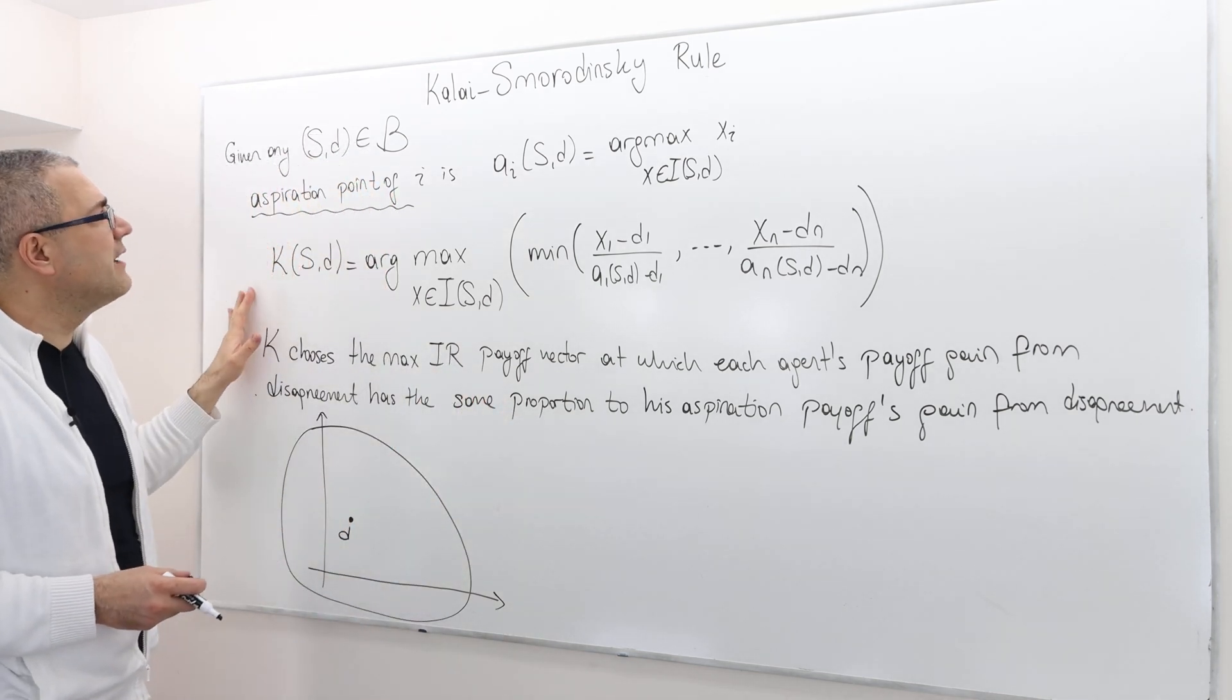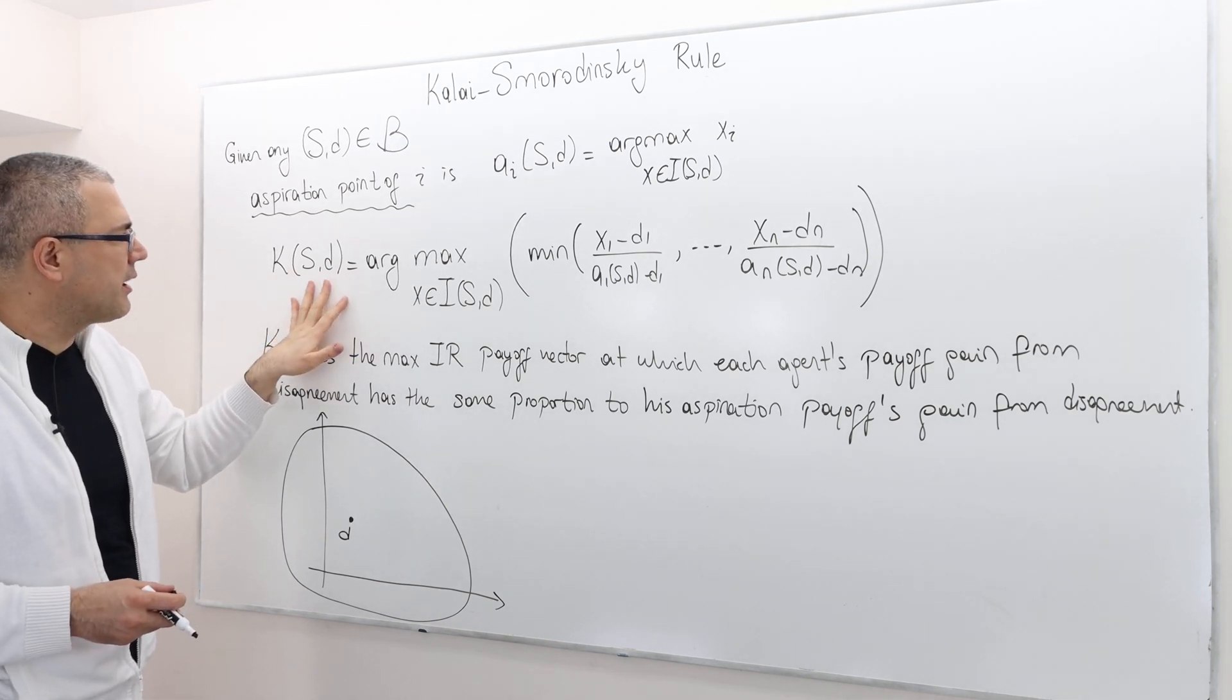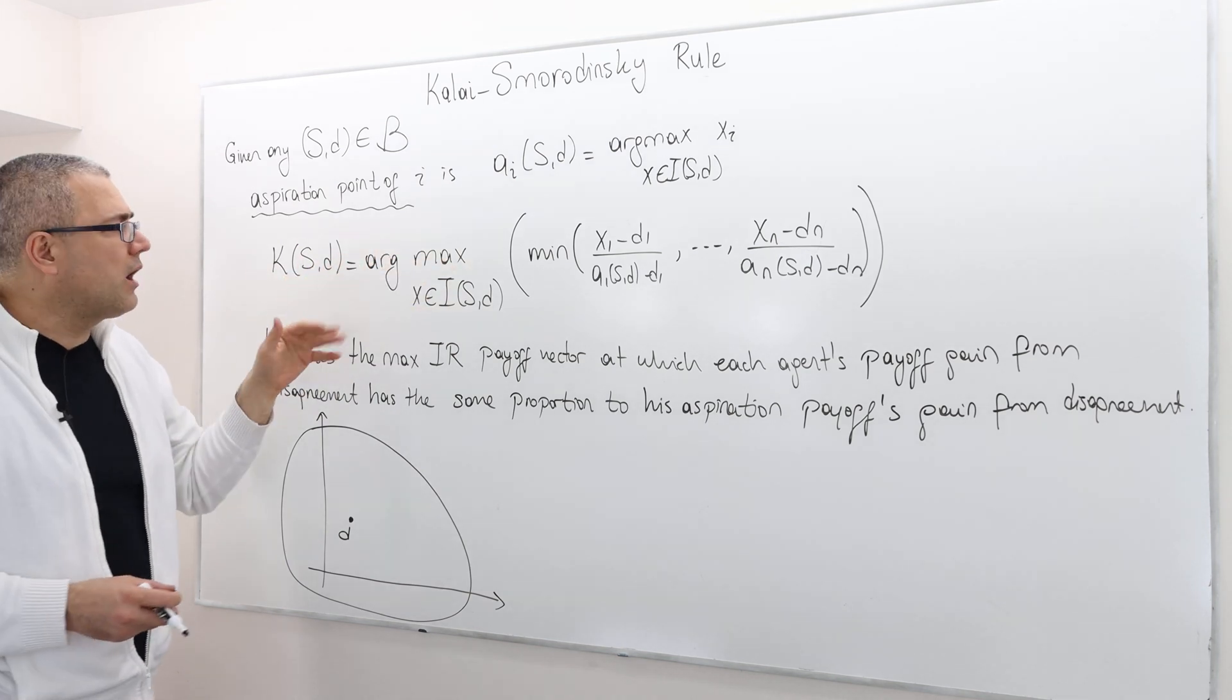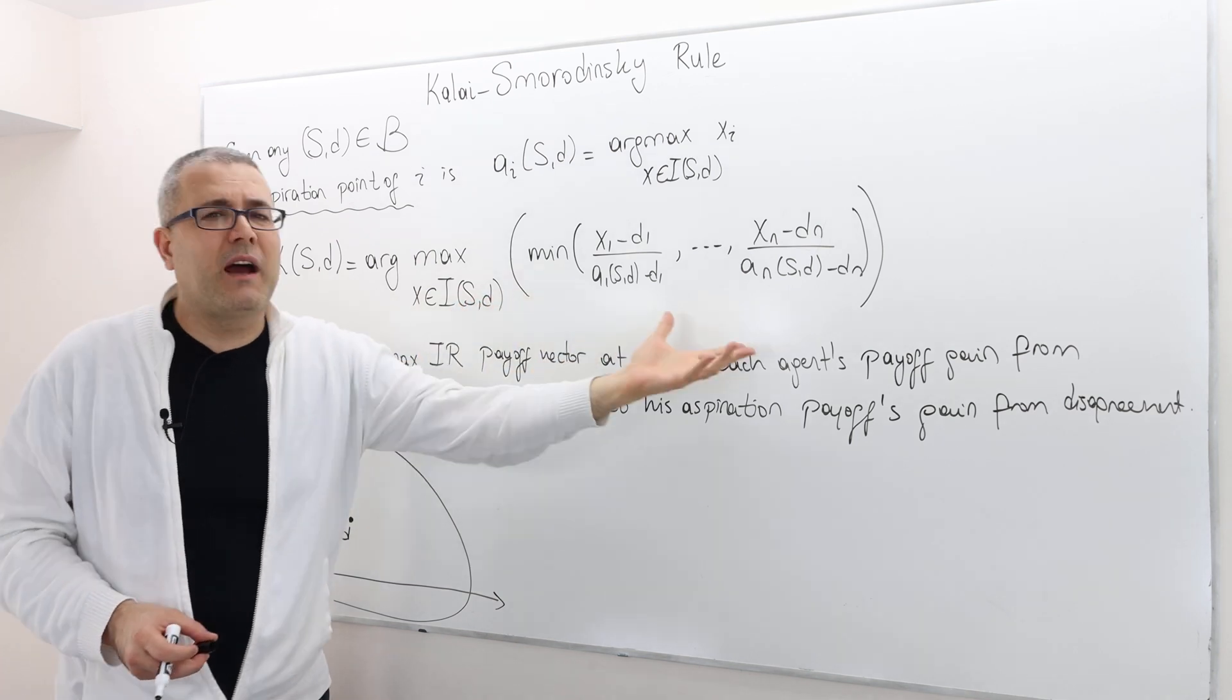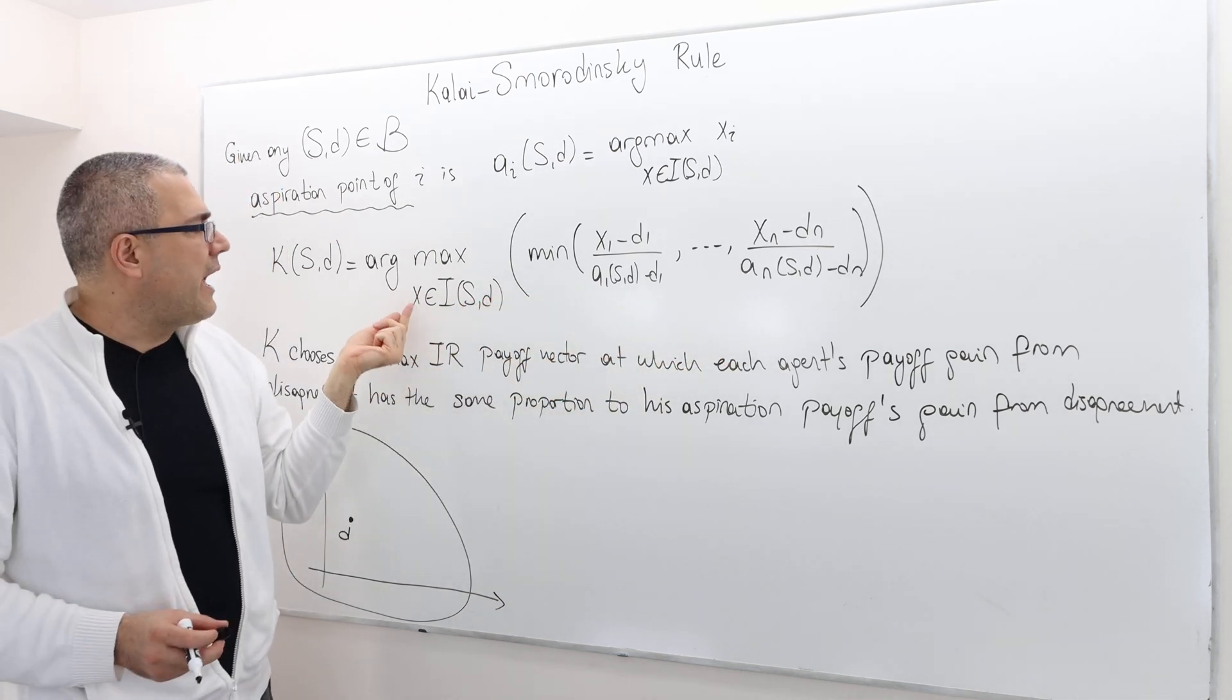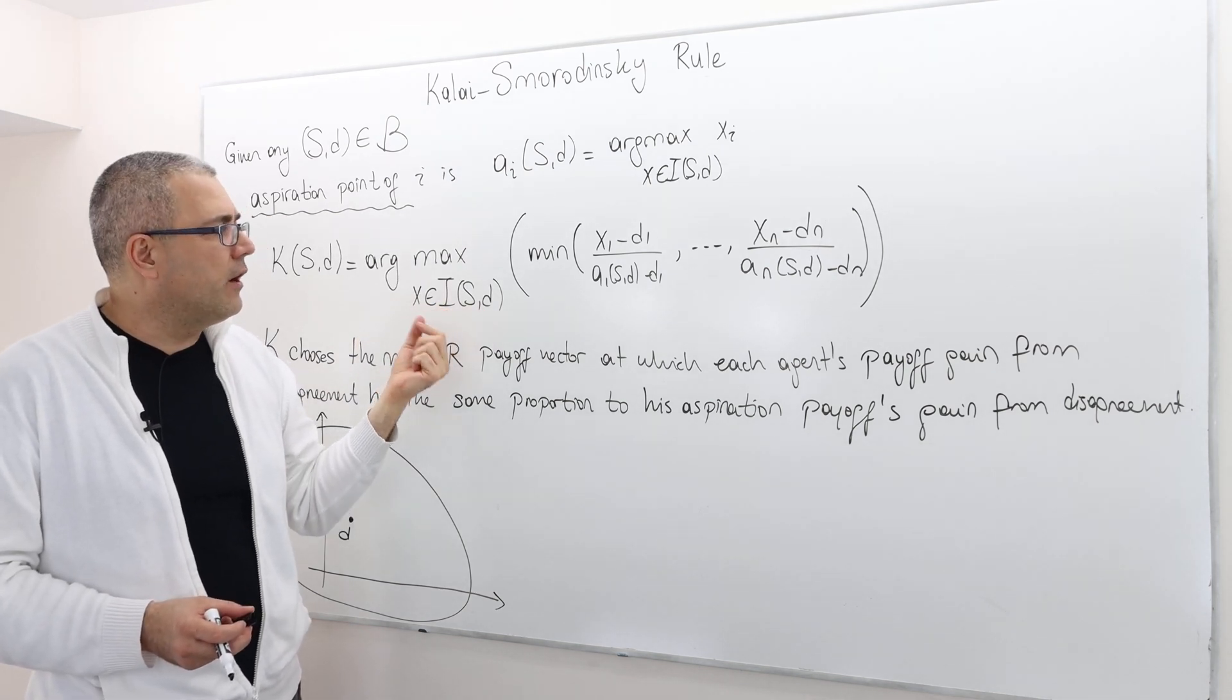Then this rule is denoted by K(SD). For any given bargaining problem, the argument is a bit more complicated. It's basically maximizing some min function, where the X's are coming from individually rational and feasible payoffs.